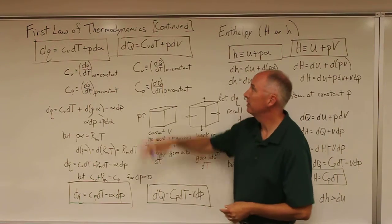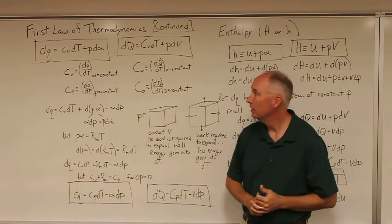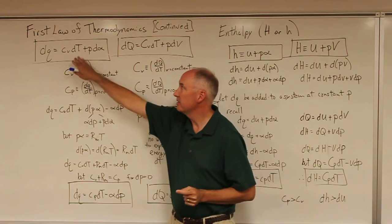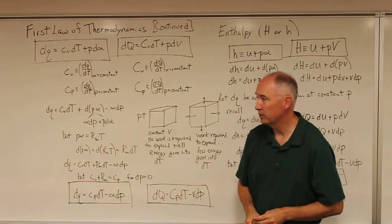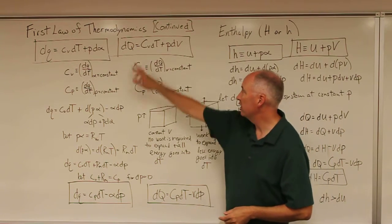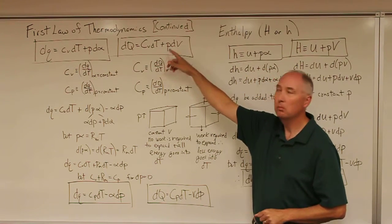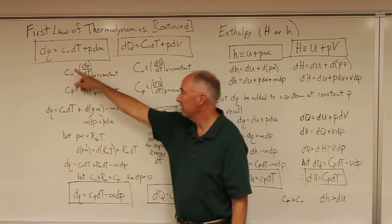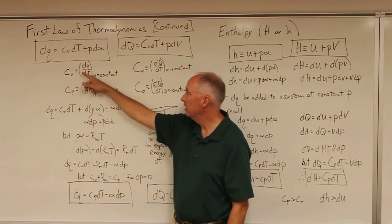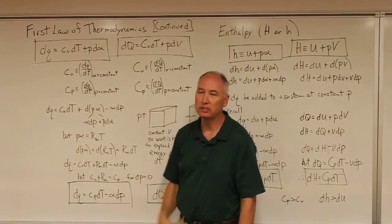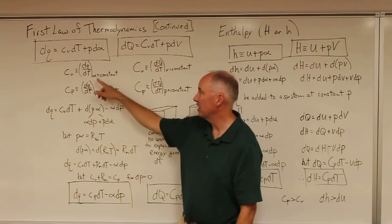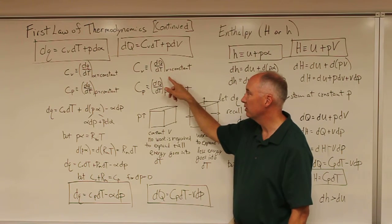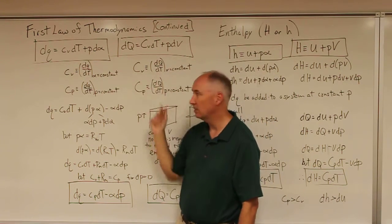In this lecture, we're going to continue with the first law of thermodynamics. Last time, we ended up with two forms of the first law: dq equals c_v dt plus p d_alpha, which was the intensive form of the equation, and dq equals c_v dt plus p dv, which was the extensive form. Recall that c_v was defined as the amount of heat required to increase the temperature of the molecules of a substance under constant specific volume or constant volume.